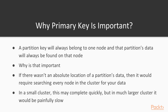So why is the primary key so important? A partition key will always belong to one node, and that partition's data will always be found on that node. If there were no absolute location for partition data, it would require searching every node in the cluster. In a small cluster this might complete quickly, but in a much larger cluster it would be painfully slow.